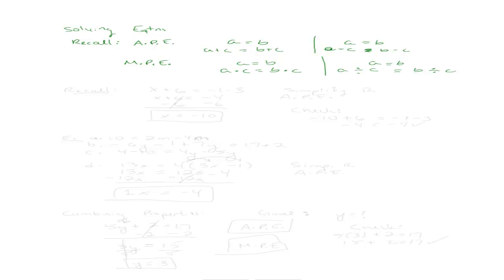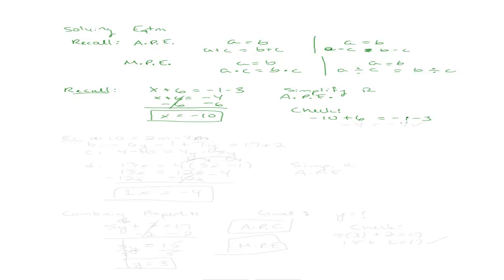We're going to use these properties in combination with what we know. Let's do an example to recall: x plus 6 equals negative 1 minus 3, and I want to solve for x. One of the things I need to do before I even start is simplify the right side — negative 1 minus 3 gives me negative 4. Then I use the addition property of equality to isolate x by subtracting 6 from both sides, ending up with x equals negative 10. I can check by plugging negative 10 back in: negative 10 plus 6 is negative 4, and negative 1 minus 3 is also negative 4. Both sides are equal, so I did it correctly.